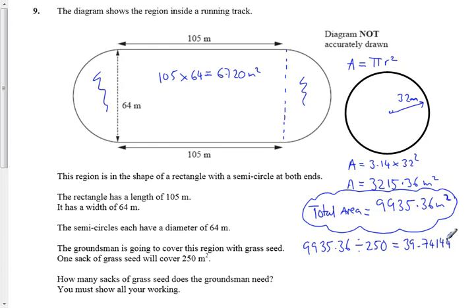Now using our common sense, we realize that therefore we need 40 sacks are needed. So actually we're going to have 39 sacks and most of the 40th sack, but we have to buy a whole sack in order to cover this last little bit, so we need 40 sacks needed overall.